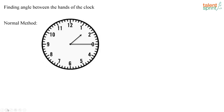Let us now look at questions from clocks wherein you are asked to find out the angle between the hands of the clock. In this given clock, the time shown is 1:15. Now we have to find out what is the angle between the hands of the clock.